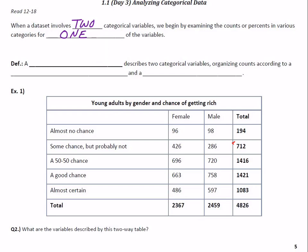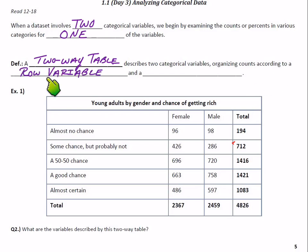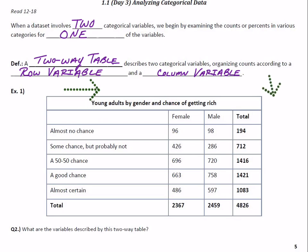The next definition: a two-way table. You've actually seen these and dealt with them before. A two-way table describes two categorical variables, organizing counts according to a row variable and a column variable. In case you were wondering, rows go sideways and columns go vertically.